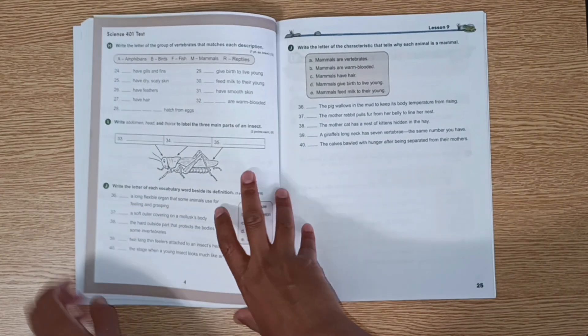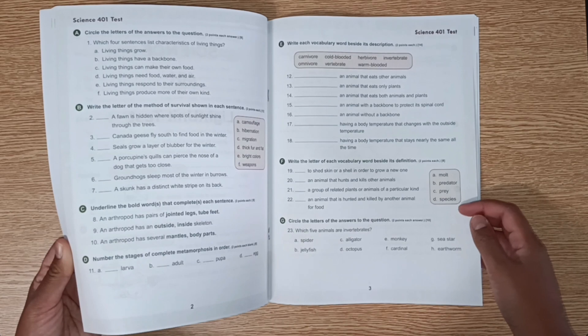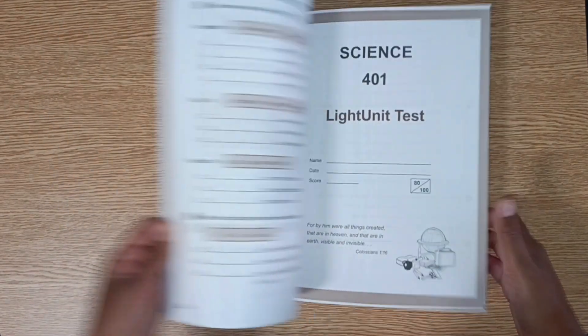They're labeling here the parts of an insect. They have vocabulary words, some matching.